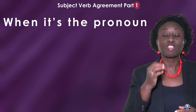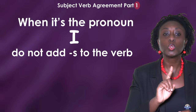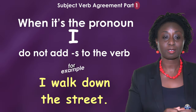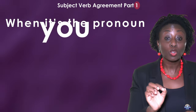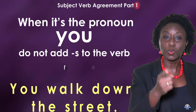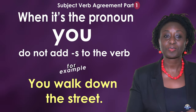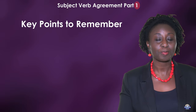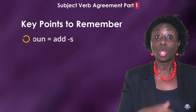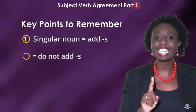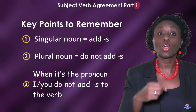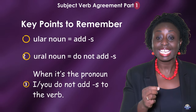When it's the pronoun I, do not add S to the verb — I walk down the street. When it's the pronoun you, do not add S to the verb — you walk down the street. Key points to remember: singular noun, add S; plural noun, do not add S; when it's the pronoun I or you, do not add S to the verb.